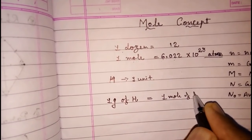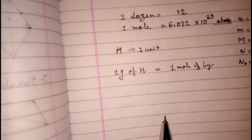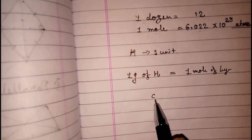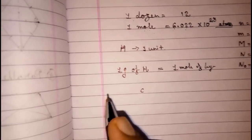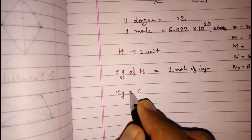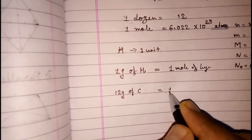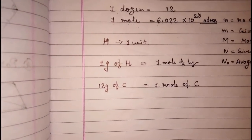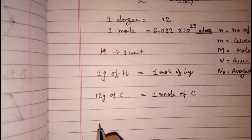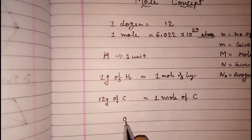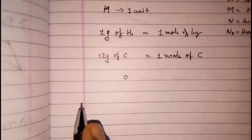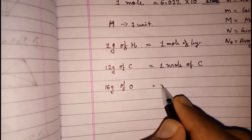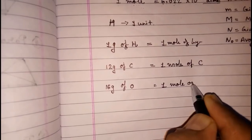Let me explain more with more examples. Take carbon — the atomic mass of carbon is 12 — so 12 grams of carbon combines to form one mole of carbon. Now take oxygen — the atomic mass of oxygen is 16 — so 16 grams of oxygen gives you one mole of oxygen.